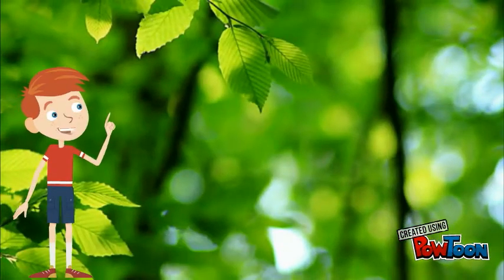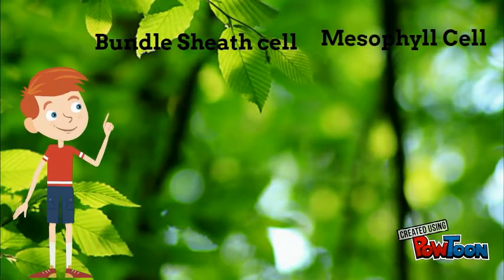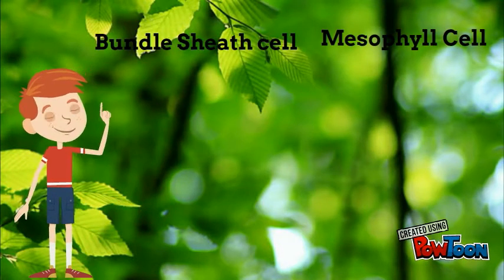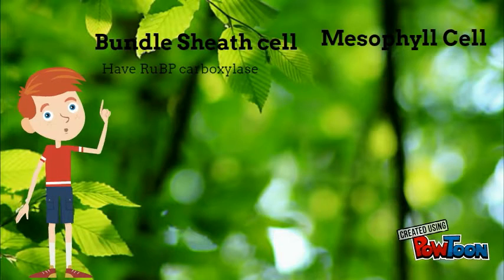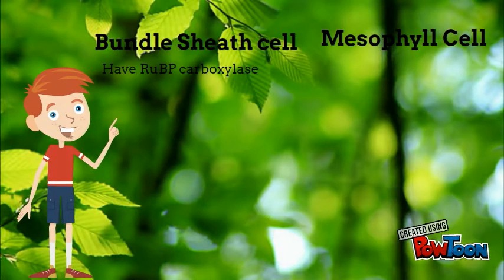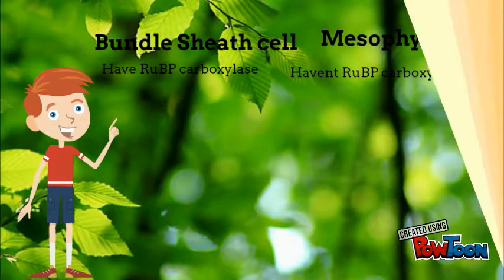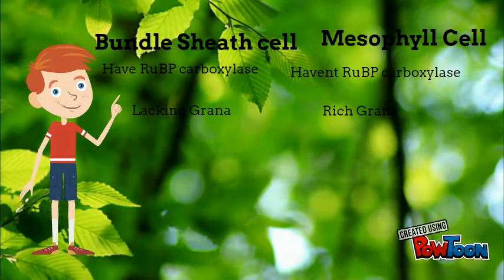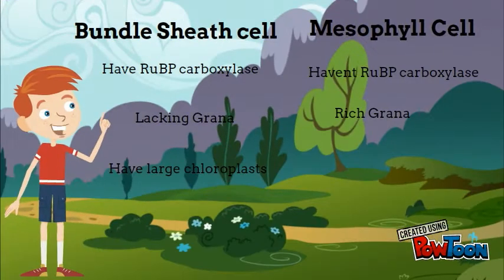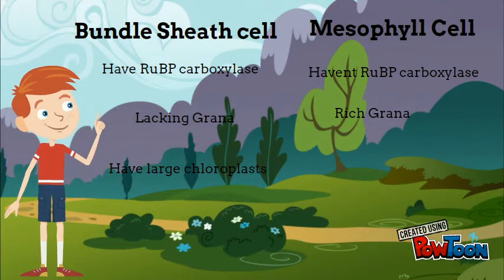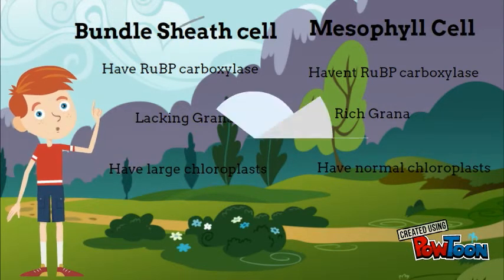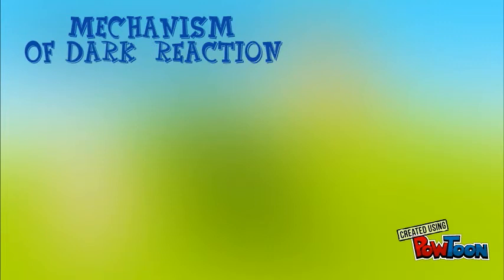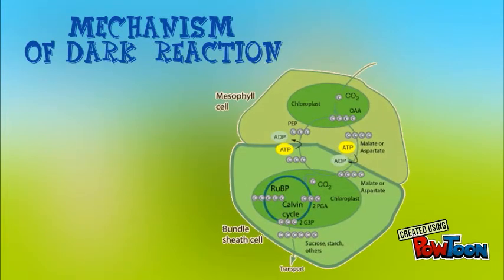Differences between bundle sheath cells and mesophyll cells: Bundle sheath cell chloroplasts have the RuBP carboxylase enzyme; mesophyll cell chloroplasts do not have RuBP carboxylase. Bundle sheath cell chloroplasts lack grana, while mesophyll cells are rich in grana. Bundle sheath cells have large chloroplasts; mesophyll cells have normal chloroplasts.